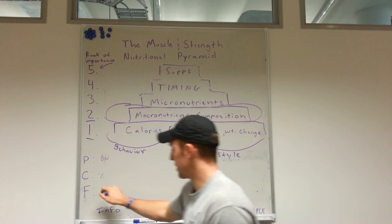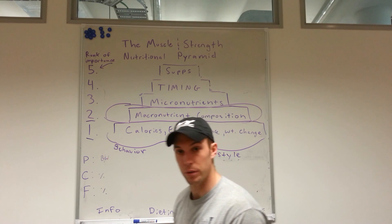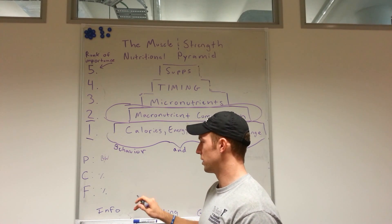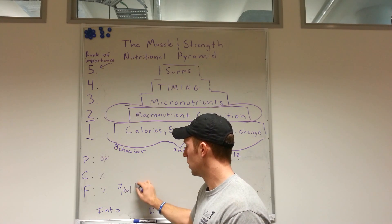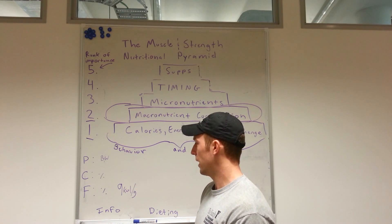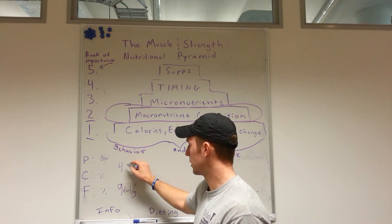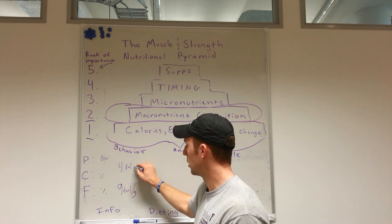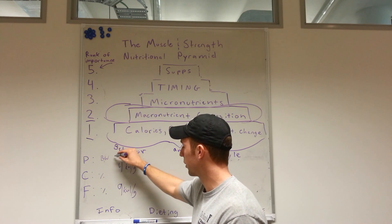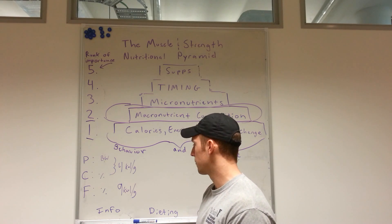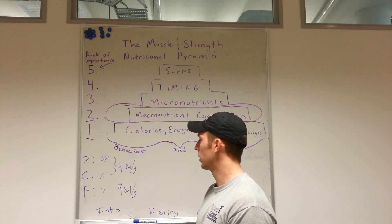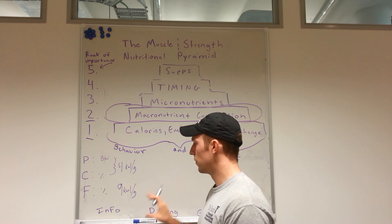Needed a better pen. So we've got percentages for fat and carbs, body weight for protein. Other things we need to know is that there are nine calories per gram in fat, and then four calories per gram for both carbs and protein.